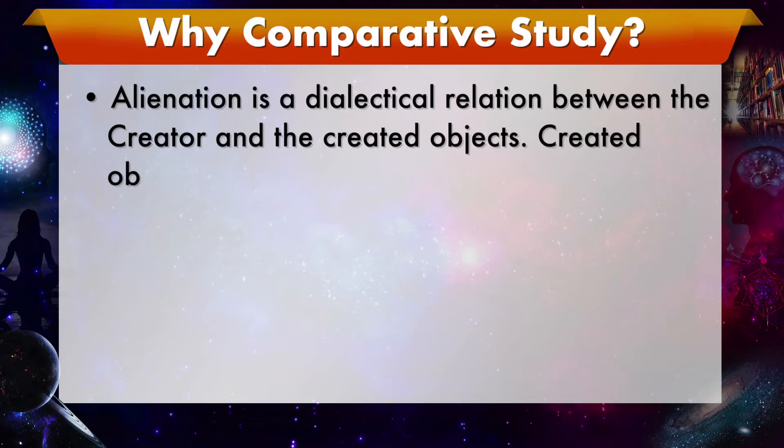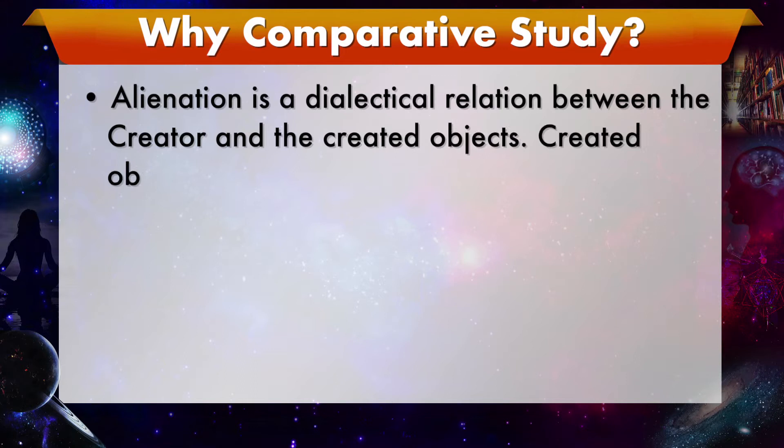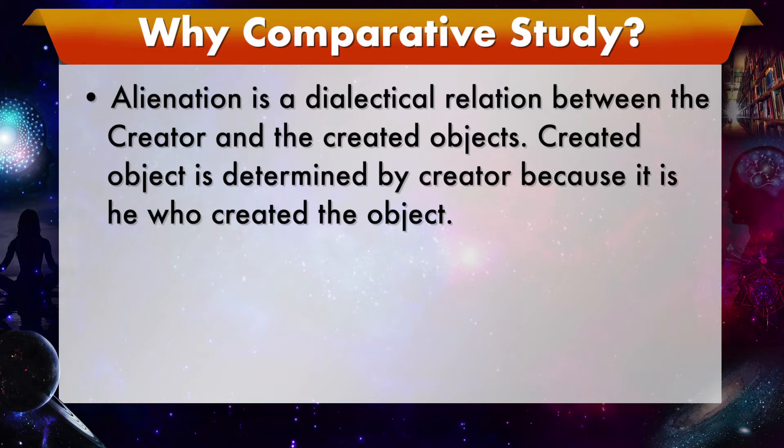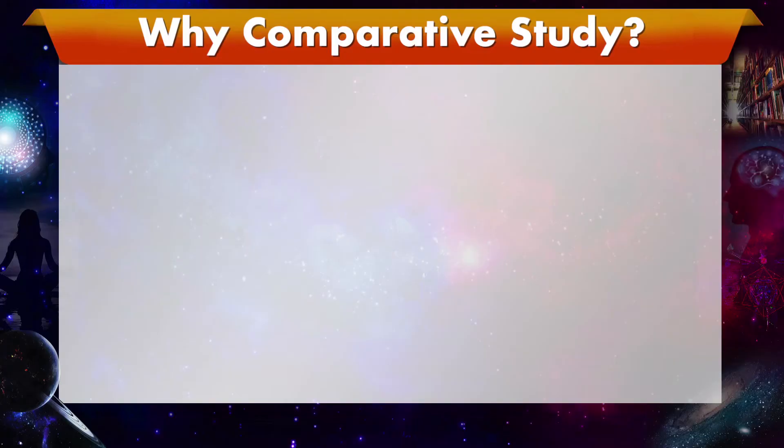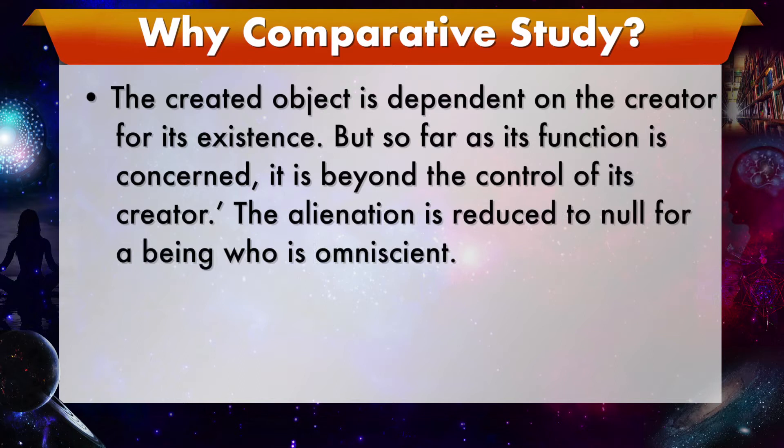The meaningfulness of the Gita can be restored only by pointing out and discovering its value in circumstances unimagined by its author. Our quotation of a shloka from the Gita is justified because creation is alienation. For a being that is not omniscient, alienation is a dialectical relation between the creator and the created objects. The created object is determined by the creator because it is he who created it, but it is also independent of him in the sense that it has become a part of the outer world. Its appreciation, evaluation, and meaningful use are functions of consciousness at large. The created object is dependent on the creator for its existence, but so far as its function is concerned, it is beyond the control of its creator.